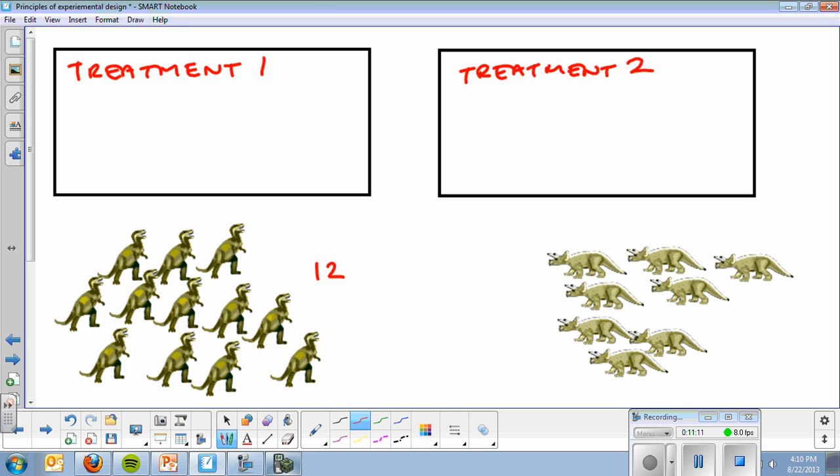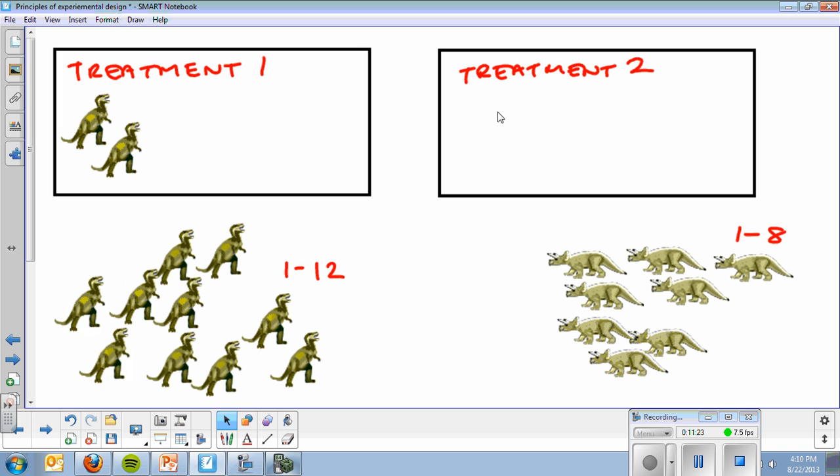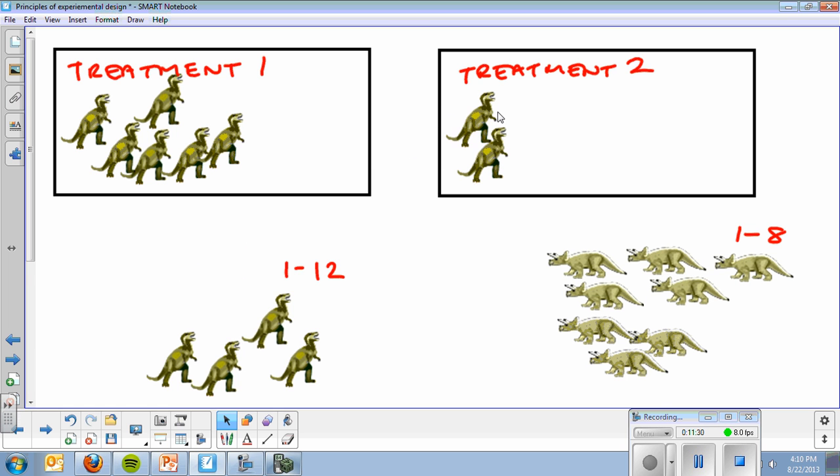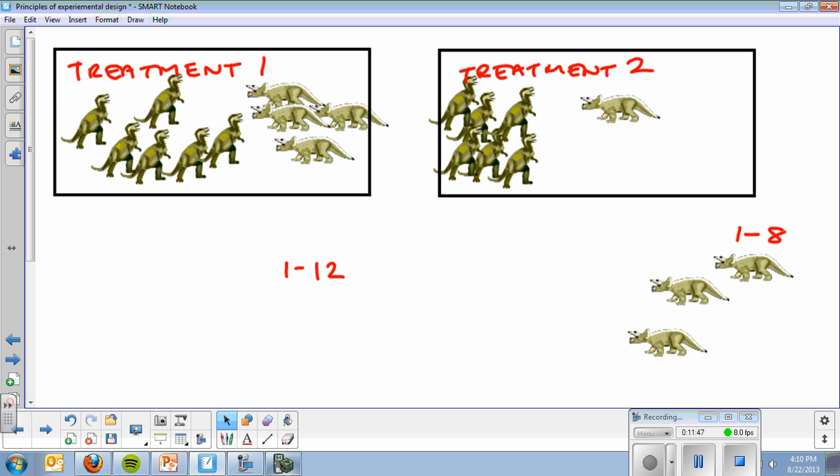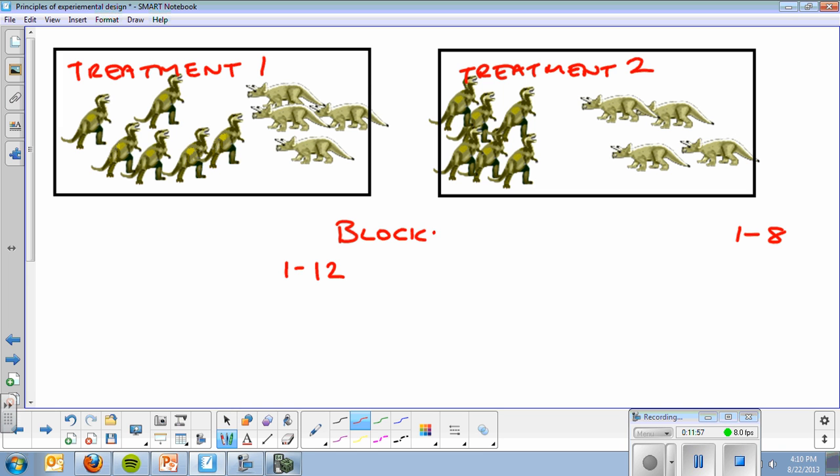So the first 6 that I pick out of the T-Rexes go to treatment 1. The leftovers go to treatment 2. I come over here to my Triceratops. They're numbered 1 to 8. The first 4 that I select will go to treatment 1, and the leftovers will go to treatment 2. That's what it looks like in a blocked design.